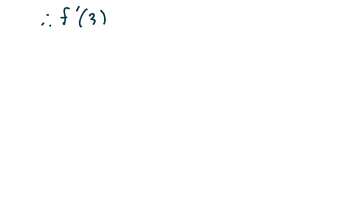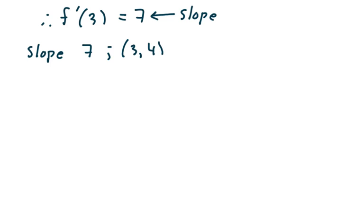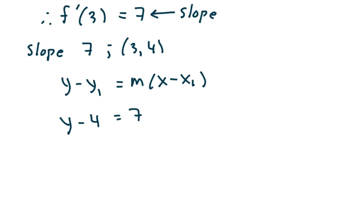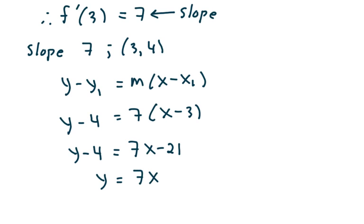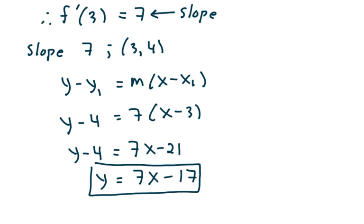Therefore f prime of 3 is equal to 7, and this represents the slope. So we have a slope of 7 and an ordered pair of (3, 4). Using point-slope form, y minus y1 equals m times (x minus x1), so y minus 4 equals 7 times (x minus 3). Solving for y: y minus 4 equals 7x minus 21, so y equals 7x minus 17. And that's example 1.